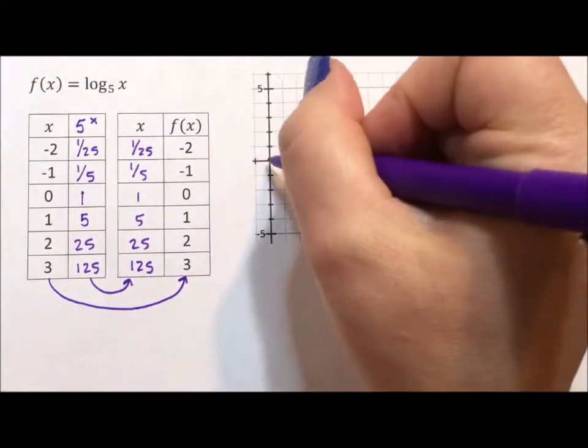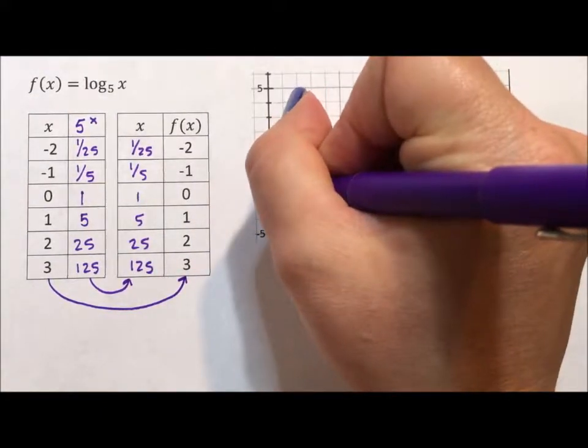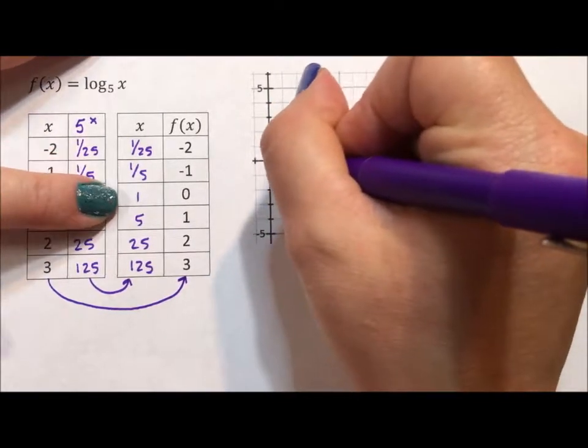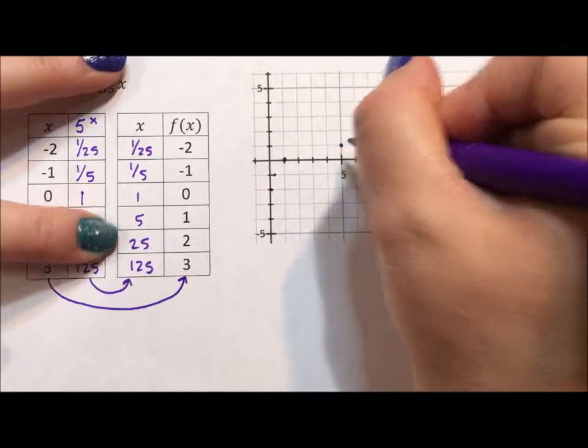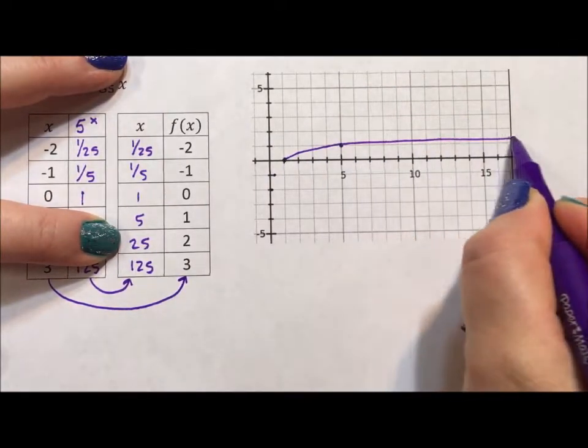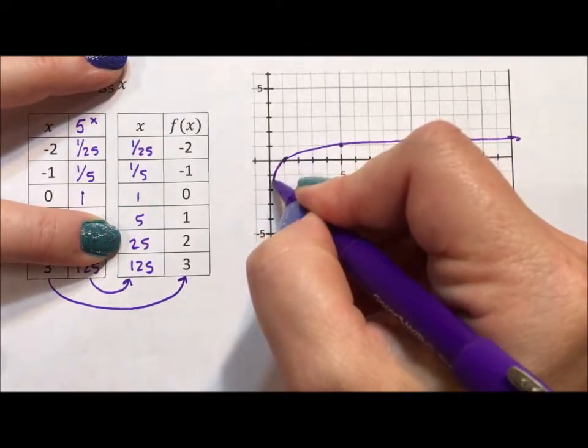Which means to graph this, I go 1 over 25, negative 2. Let's see, 1 fifth, negative 1, 1 comma 0, 5 comma 1. 25 comma 2 is already off the graph, so I'm just going to smooth graph.